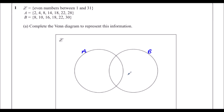So in the middle, in the intersection, are the numbers in both A and B. They've both got an 8, they've both got an 18, and they've both got a 22. So what else has A got in it? A's got 2, 4, 14 and 28. And B has got 10, 16 and 30.